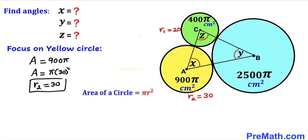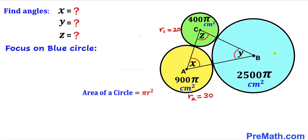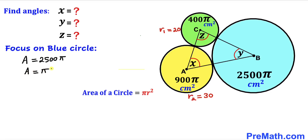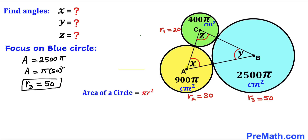Finally, let's focus on the blue circle whose area is 2500π. We can write 2500π = π × 50², since 2500 = 50². Therefore the radius r3 of the blue circle is 50 centimeters.